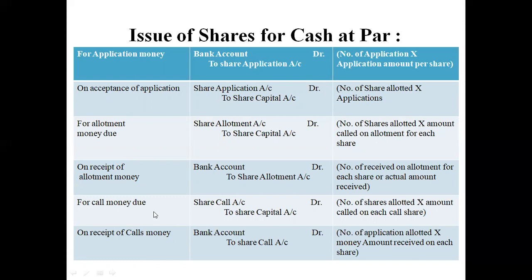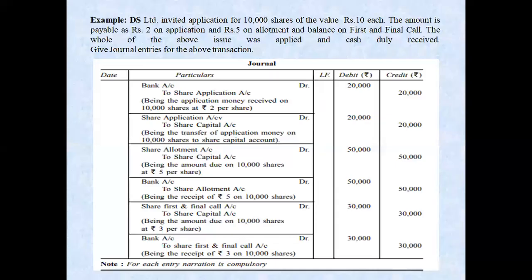On receipt of allotment money: bank account debit to share allotment account। For calls due — whether first call or second call: share first call account debit (or share second call account debit) to share capital account। On receipt of call money: bank account debit to share calls account।